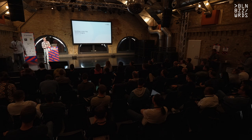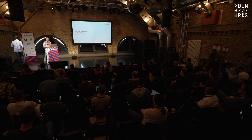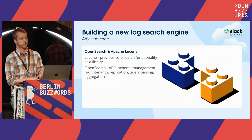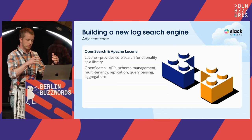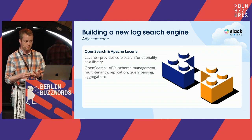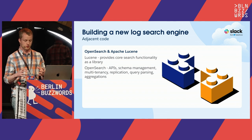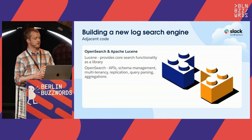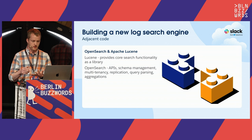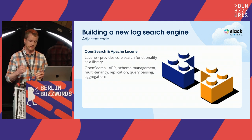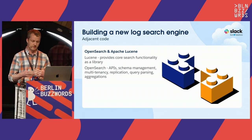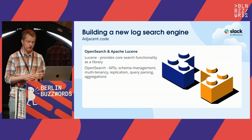I'd like to talk about some of the ways we've reused existing code in building our solution. The first thing to establish is the relationship between Lucene and OpenSearch. Lucene is the core search library providing things like field types, tokenization, and the document model. OpenSearch gives us additional things you need when running Lucene as a service: APIs, schema management — including dynamically allocating and changing schemas as Varun mentioned — high availability modeling, query parsing, and aggregations.